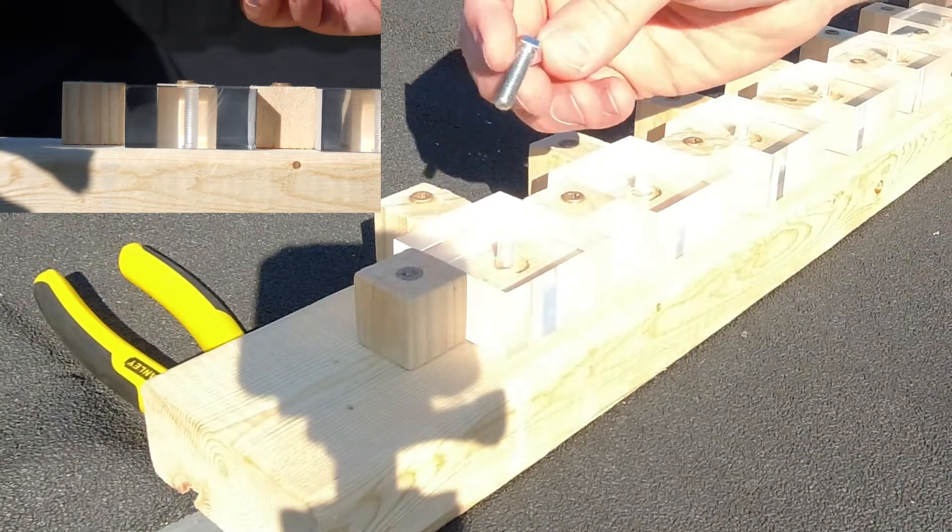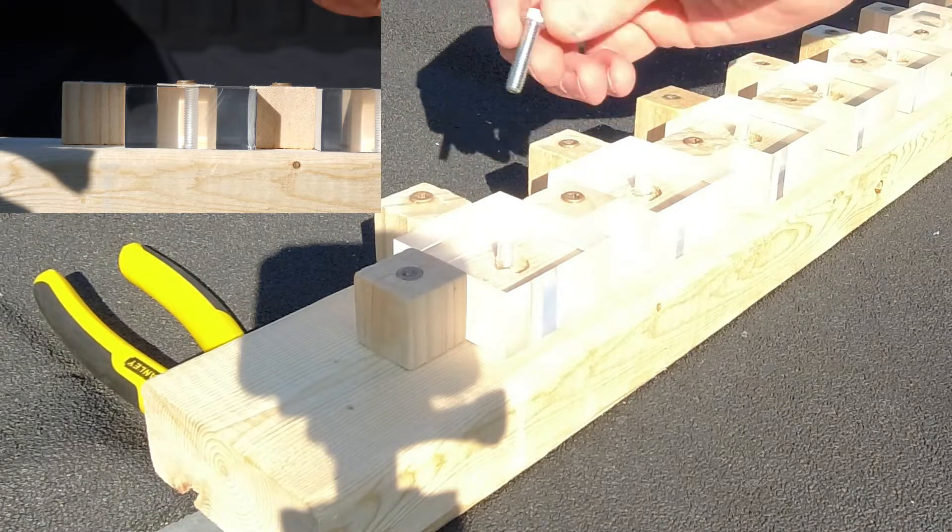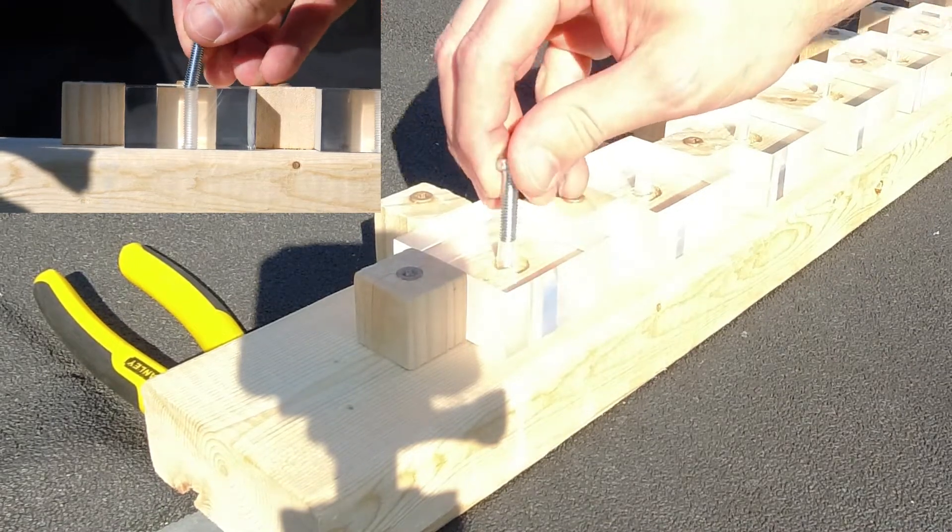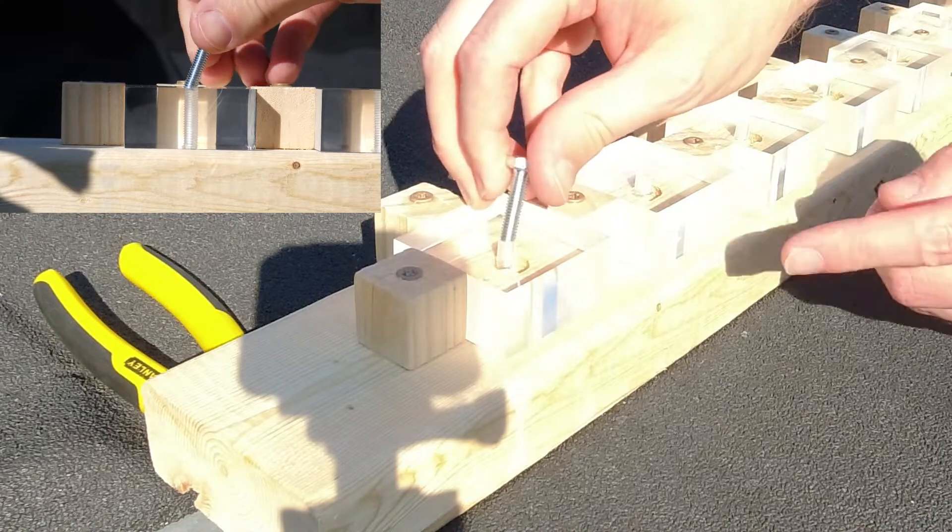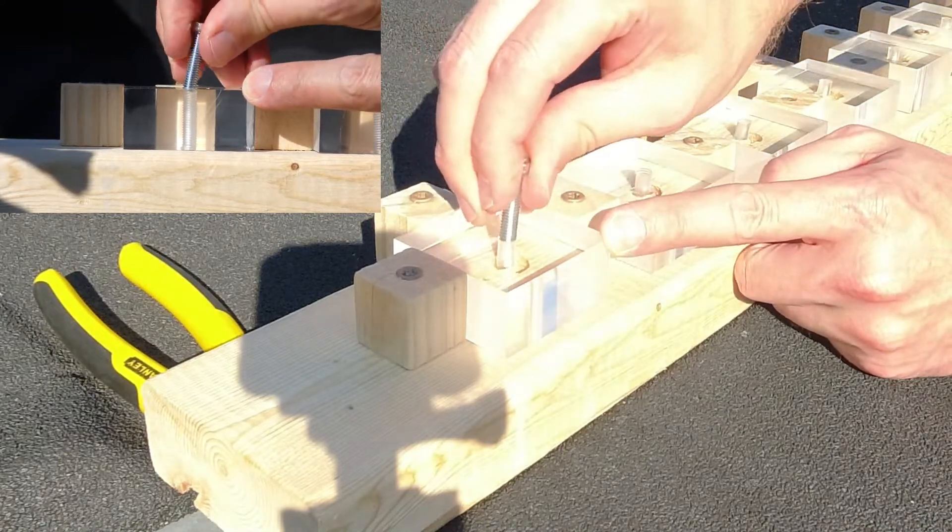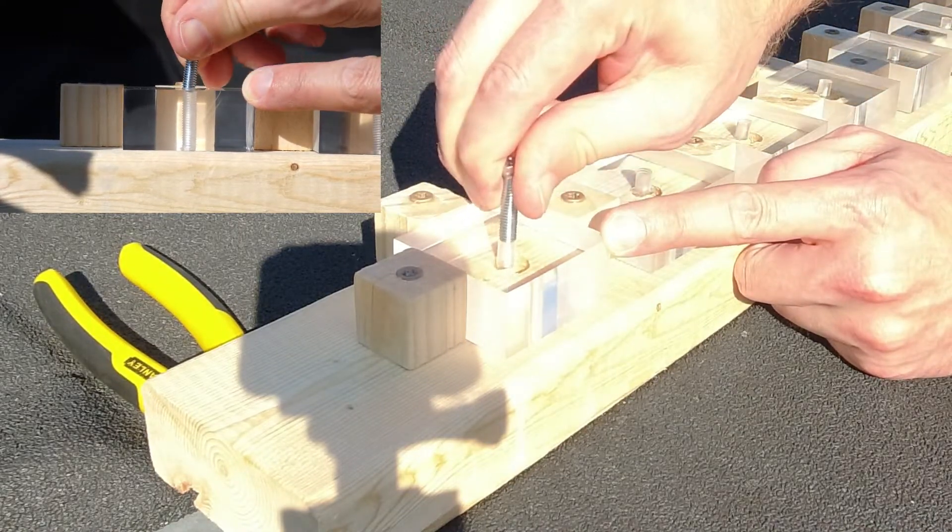The first thing we'll cover is how you usually strip out a hole on a car. For most of you already know, it usually starts when you cross-thread it - that's one of the most common reasons. Basically when you start off at an angle and you start threading in there.